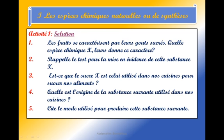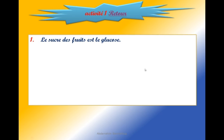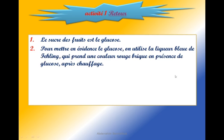Rappelle le test pour la mise en évidence de cette substance X. Pour mettre en évidence le glucose, on utilise la liqueur bleue de Fehling, qui prend une couleur rouge brique en présence de glucose après chauffage.